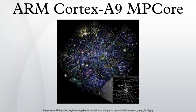Key features of the Cortex-A9 core include an out-of-order speculative issue superscalar execution pipeline giving a 2.50 DMIPS/MHz score, and a NEON SIMD instruction set extension performing up to 16 operations per instruction.